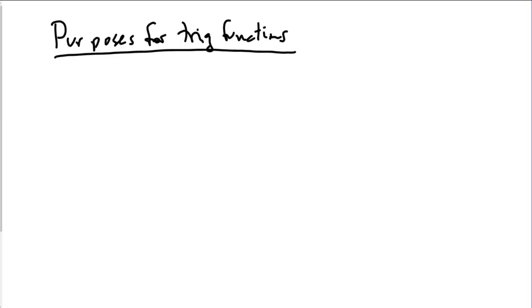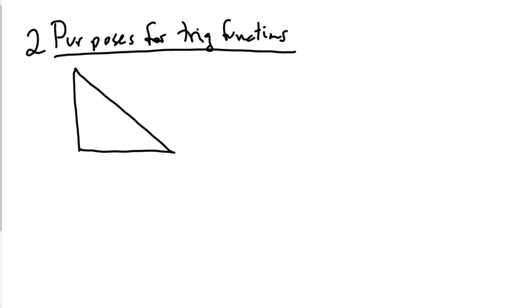Basically, there are two purposes for trig functions. One is the one that Dr. Fowler alluded to in the other video, and that was to take advantage of similar triangles. So if we have an angle here and we have another triangle that has the same angle, these are both right triangles.